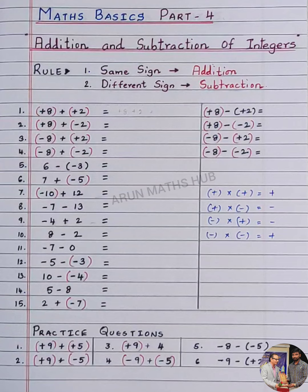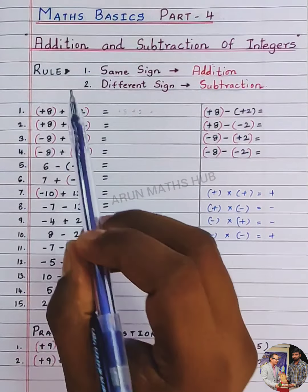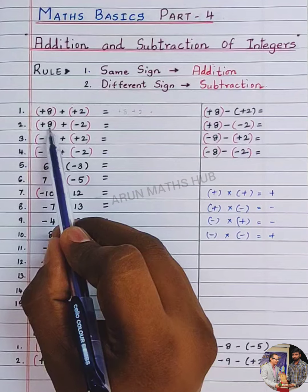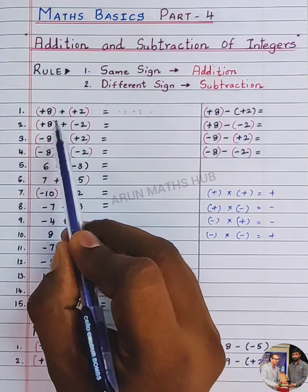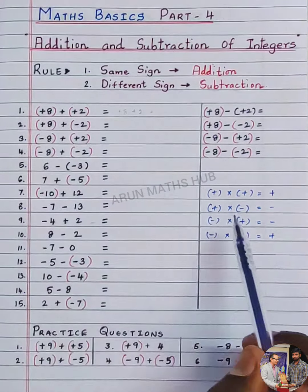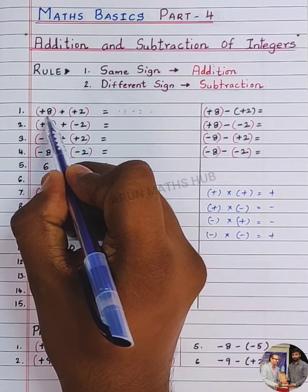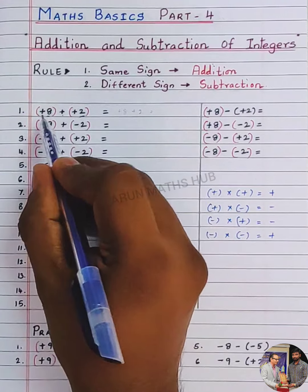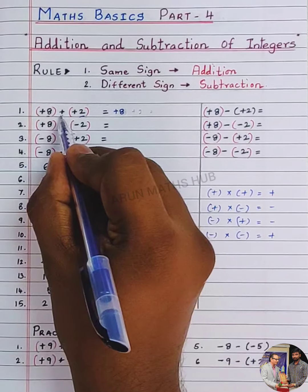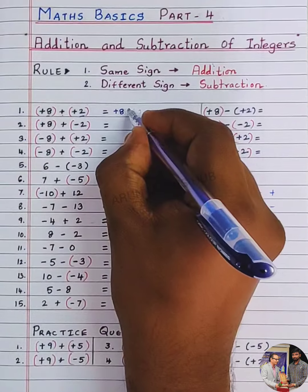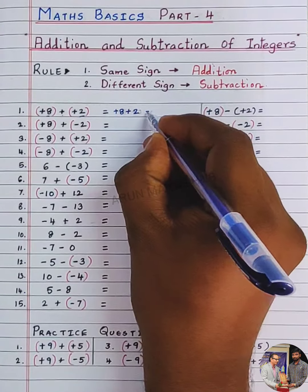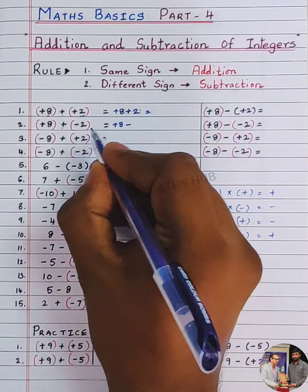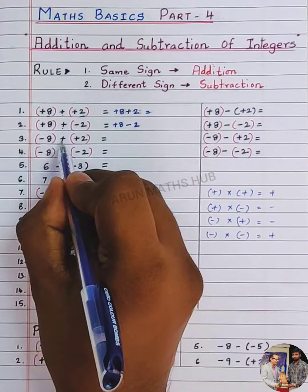Because, dear students, here in between the numbers — that is 8 and 2 — you have two signs: plus and plus. In between the numbers, if you have two signs, you should multiply them first. Plus into plus is plus. So plus 8, plus into plus is plus, gives plus 2. Plus into plus is plus.